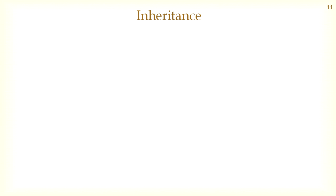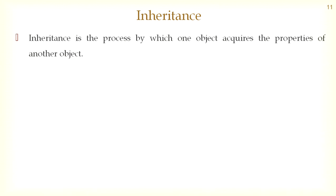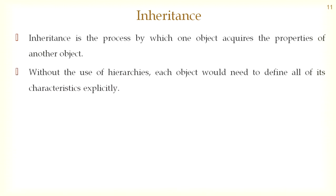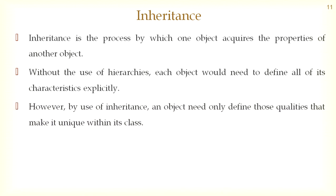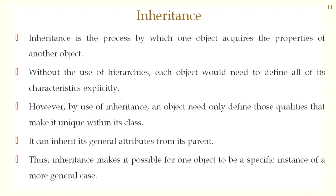The last topic is inheritance. Inheritance is a process by which one object acquires the properties of another object. Using hierarchies, each object would need to define all of its characteristics explicitly. However, by use of inheritance, an object need only define those qualities that make it unique within its class. It can inherit its general attributes from its parent. Thus inheritance makes it possible for one object to be a specific instance of a more general case.